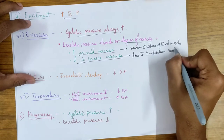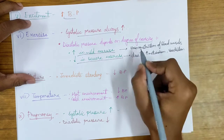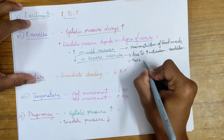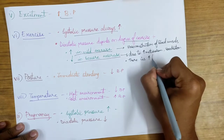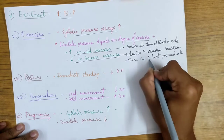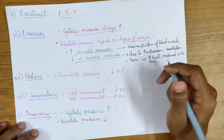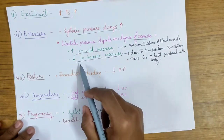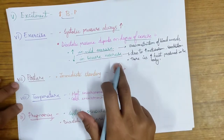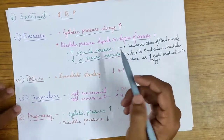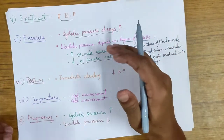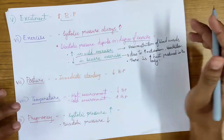In severe exercise, diastolic pressure decreases because increased metabolism causes vasodilation, and increased heat produced in the body also causes vasodilation. So in severe exercise the diastolic pressure decreases. As for pulse pressure in severe exercise, it increases — because pulse pressure is the difference between systolic and diastolic pressure, and when these two move in opposite directions, pulse pressure increases.